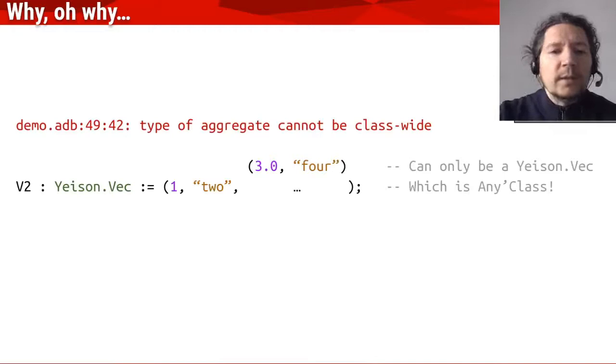Because we know that the only type that can be that expression on top is a vector. So, it doesn't matter that the placeholder is class-wide because we are using an expression that can only be a vector.